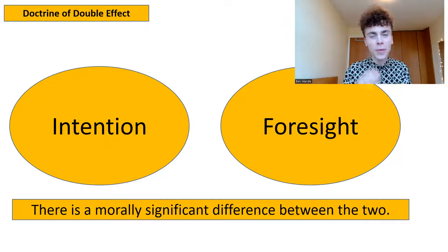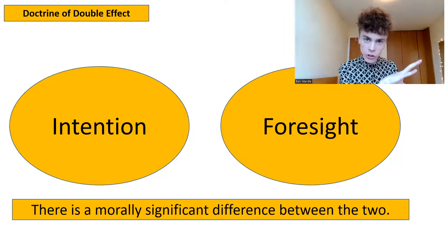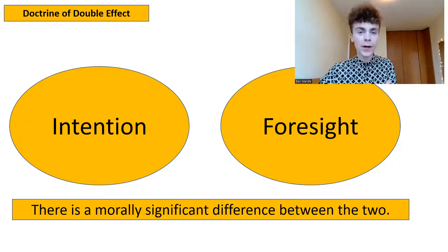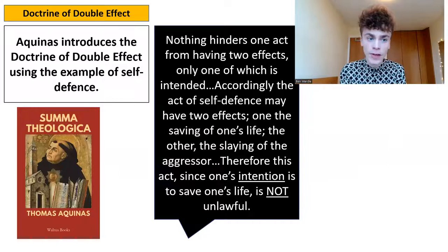When we start to apply these to some concrete examples, they will make a little bit more sense. But it is really important that you know Aquinas distinguishes between intention — having the intention to do something — and foresight — simply being aware that something may happen, but not necessarily intending for it to happen, not consciously wanting it to happen.